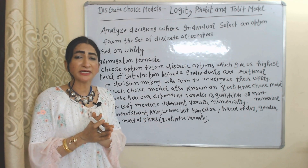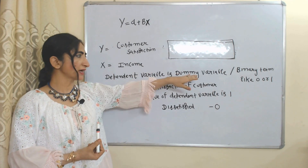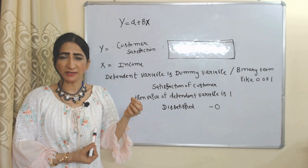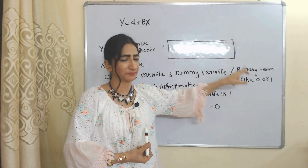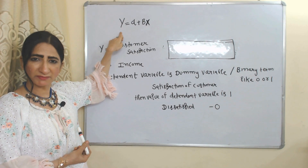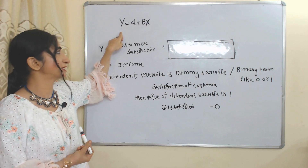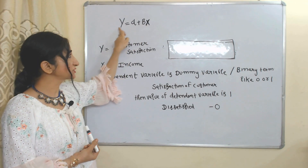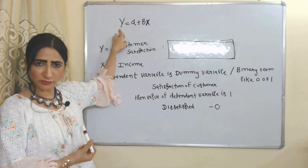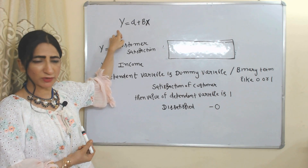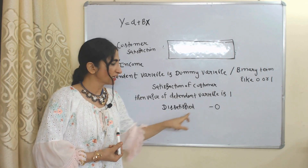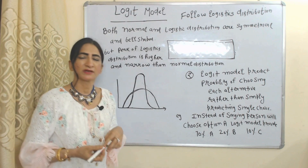A qualitative dependent variable is also known as a dummy variable. We cannot measure it numerically, so in order to measure a dummy variable we provide binary terms like 0 or 1. For example, here Y is customer satisfaction — we cannot measure customer satisfaction in terms of numbers, so Y is a dummy variable. X is quality of product, which is the independent variable. If the customer is satisfied, Y equals 1; if not satisfied, Y equals 0.